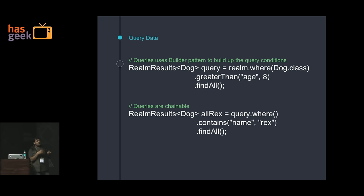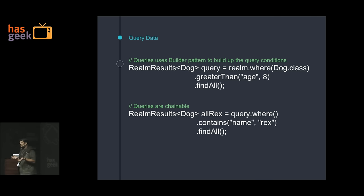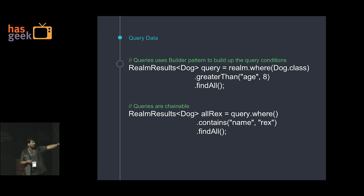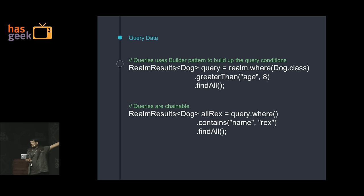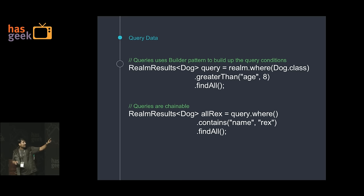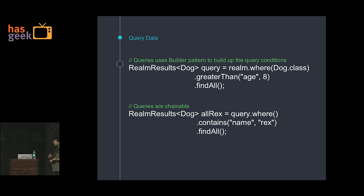It supports lots of querying types. You can say you want an age greater than 8. You can also chain queries — for example, from dogs find all dogs with age more than 8, get the result, and then query on that result again without going back to the database. Then you can say return all dogs whose name is Alex. You can chain queries together and the interface is very fluent.